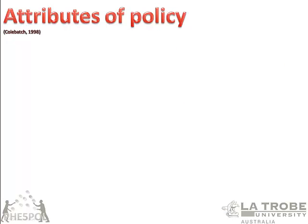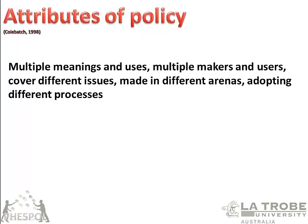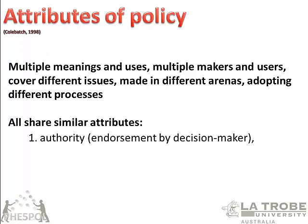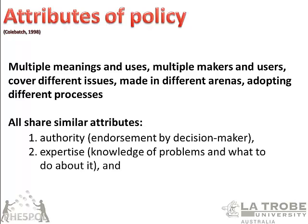Colbatch, one of the really astute scholars in the political sciences, says there are a number of things you always see in policy: multiple meanings and uses, multiple makers and users. Policies cover different issues made in different arenas — not just in ministries or parliaments — and they adopt different processes. Between countries there are different traditions. But all of these things share similar attributes: authority, expertise, and order. Policy means the endorsement by an authoritative decision maker.